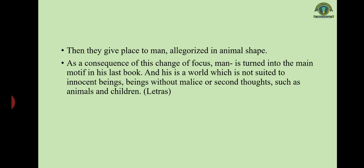In his first phase of writing, there is vivid depiction of animals. Then his focus of attention moved towards man himself. He gave place to man who was allegorized in animal shape. If we divide Hughes's writing career into three phases: in the first, we find animals; in the second, there is a debate about both men and animals; and in the third phase, it is purely man who is in focus, depicted through animals.